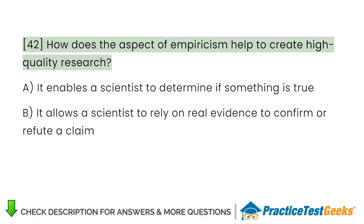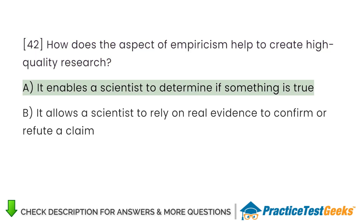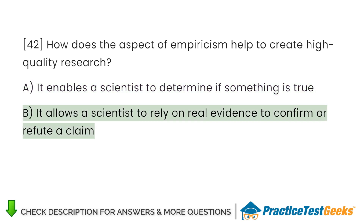How does the aspect of empiricism help to create high-quality research? A. It enables a scientist to determine if something is true B. It allows a scientist to rely on real evidence to confirm or refute a claim